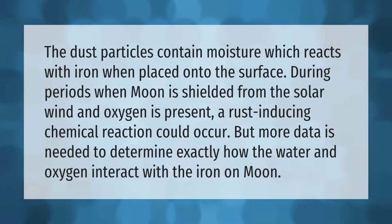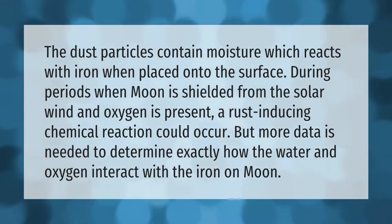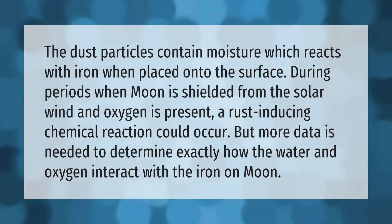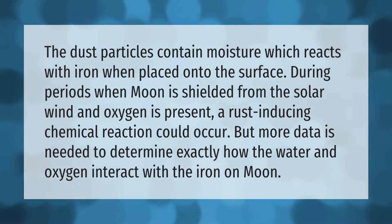The dust particles contain moisture which reacts with iron when placed onto the surface. During periods when the moon is shielded from the solar wind and oxygen is present, a rust-inducing chemical reaction could occur, but more data is needed to determine exactly how the water and oxygen interact with the iron on the moon.